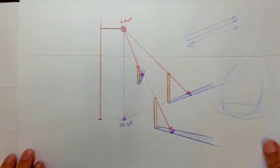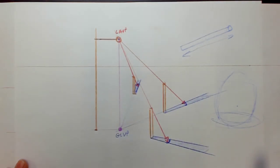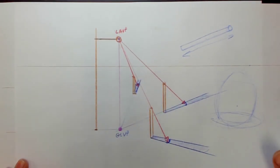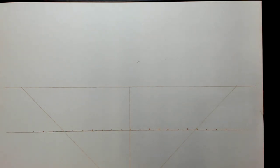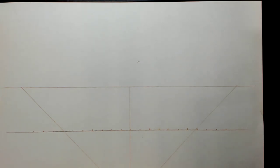We're going to continue on with artificial light. Last time we introduced the concept of the light bulb as the light angle vanishing point, and the ground line vanishing point being directly 90 degrees to the surface that the objects are on. Now let's do something more elaborate — we'll build a one-point perspective room, put some furniture in it, add a light bulb, and cast some shadows. This first part is a throwback to one-point perspective, so if it's not making sense, go back and watch those one-point perspective videos.